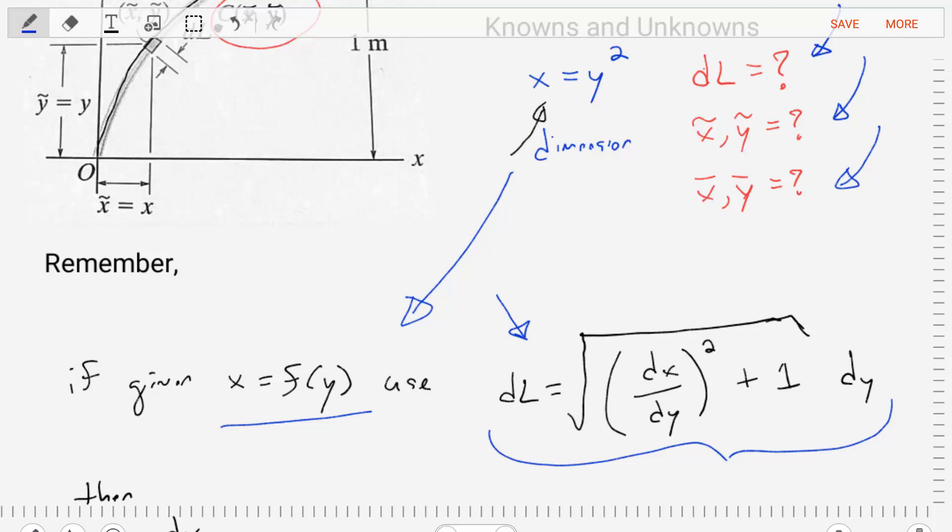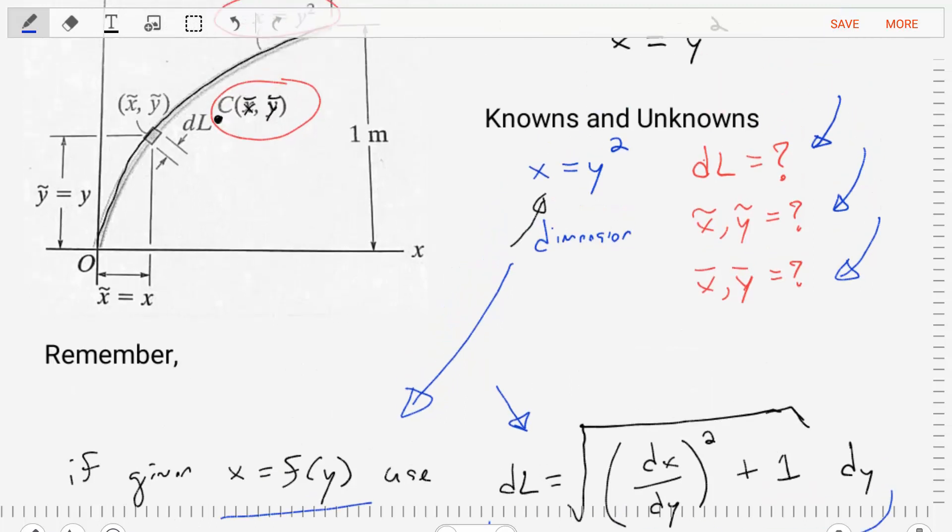We also want to note that the differential length, we can physically draw it, as it represents some portion of the length of our rod. It's important that concept, that that differential length represents some portion.